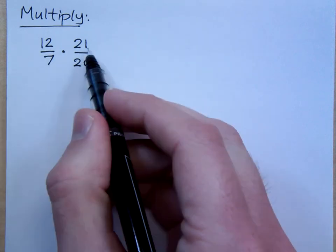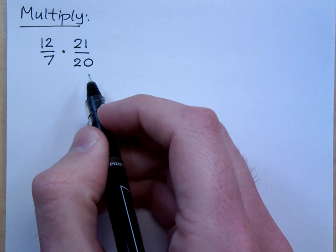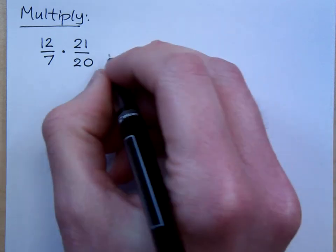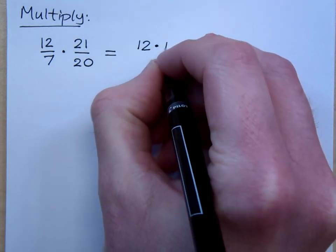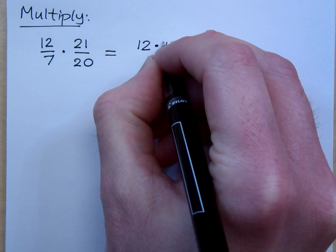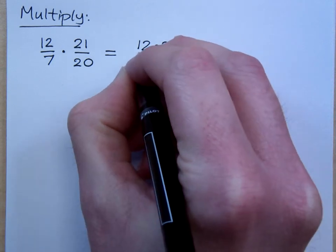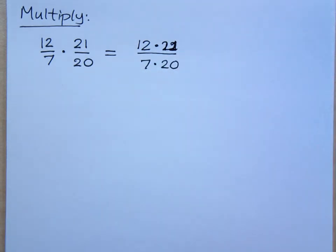If I ask you to multiply 12 over 7 times 21 over 20, you could do 12 times 21 and get a really big number, and do 7 times 20 and get an even larger number, but then you're just going to have to reduce that mess. So before we do that, I like to rewrite this and say this is 12 times 21 over 7 times 20, and I look for those common factors.